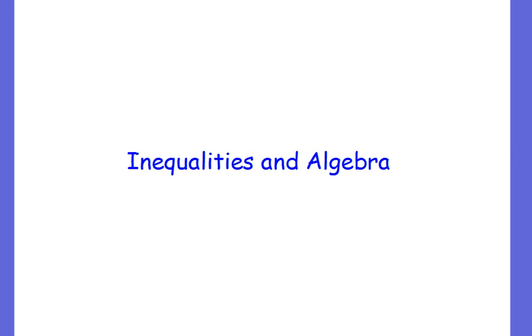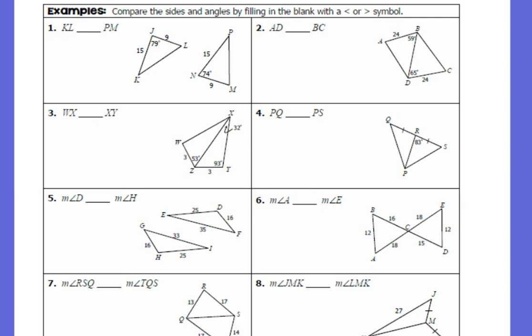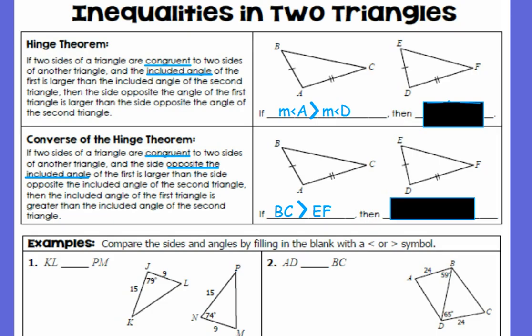Alright, so we already learned the hinge theorem. Let's recap that real quick. We took these notes. The hinge theorem basically says if you have two triangles and you've got two sides marked congruent to two sides, and what we call the included angle, which should be this guy right here, if that angle is greater than this angle over here, then the side opposite that angle is also greater than the side opposite that one. That was the hinge theorem.